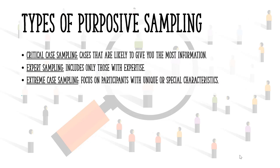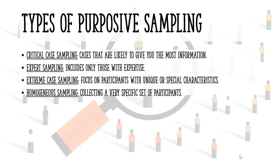The technique of extreme case sampling focuses on people with unique or special characteristics. Homogenous sampling is collecting a very specific set of participants — for example, age 20 to 24, college educated, and female.